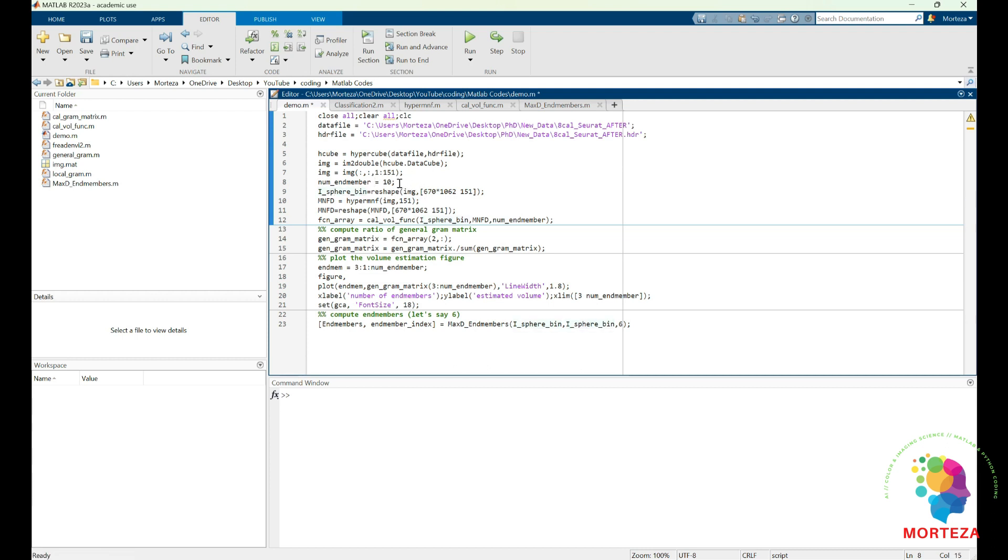So first I need to change the hyperspectral image into a matrix form. I'm going to call it ispherbin. And here I'm going to be extracting the principal components using maximum noise fraction. And then I'm going to also change that into a matrix form, just like here.